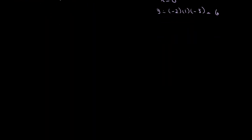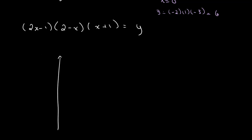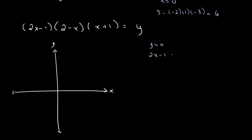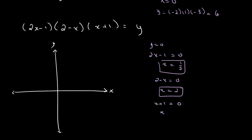Let's look at another example. This one is also factorized: (2x minus 1) multiplied by (2 minus x) times (x plus 1) equals y, and we have to sketch this as well. Once again, we need to find our points of intersection. It intersects the x-axis where y equals 0: 2x minus 1 equals 0 gives x equals 1/2; 2 minus x equals 0 gives x equals 2; and x plus 1 equals 0 gives x equals negative 1. Those are our three x-intercepts.